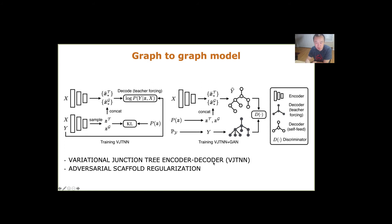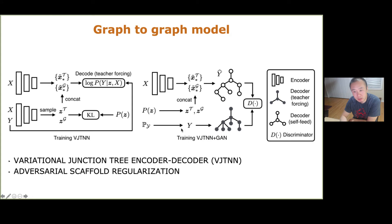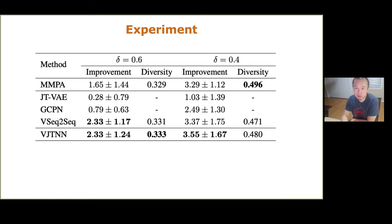VJTNN is similar to the previous junction tree VAE paper but enhances the encoder process so it is more unified for both graphs and trees, and it also utilizes an attention mechanism in the decoding process for better performance. The second component — which is new in this graph-to-graph model — is an adversarial training module added as a regularization component to further enhance the embedding.